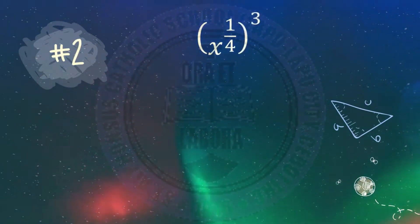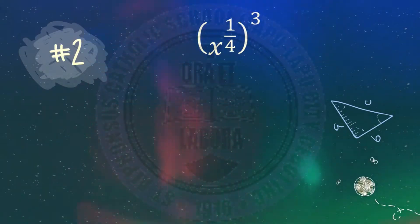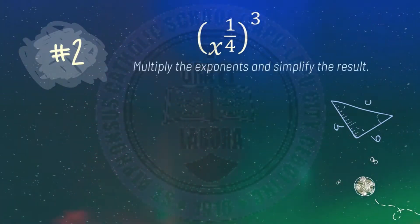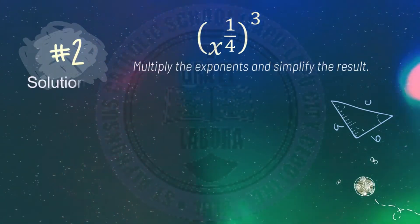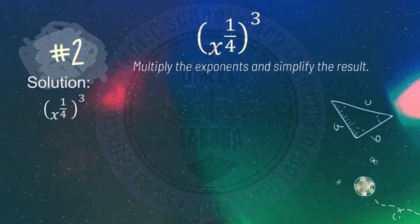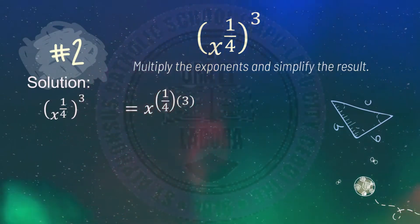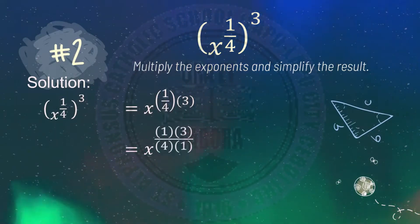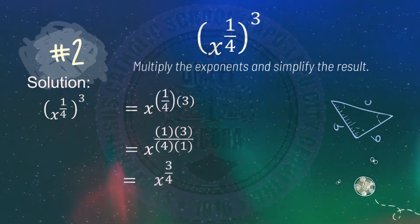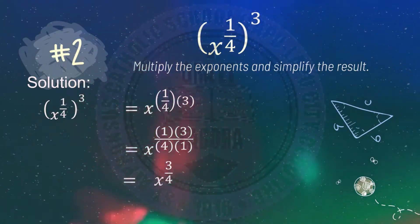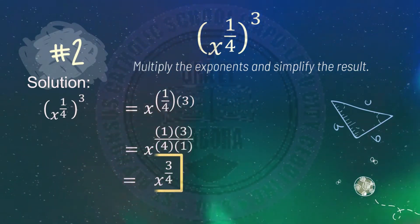Number two: x raised to 1 fourth, raised to 3. All you need to do is multiply the exponents and simplify the result. With base x, multiply 1 fourth times 3, which is 1 over 4 times 3, giving 1 times 3 all over 4 times 1. That's 3 over 4. Since you cannot simplify 3 fourths, the final answer is x raised to 3 fourths.